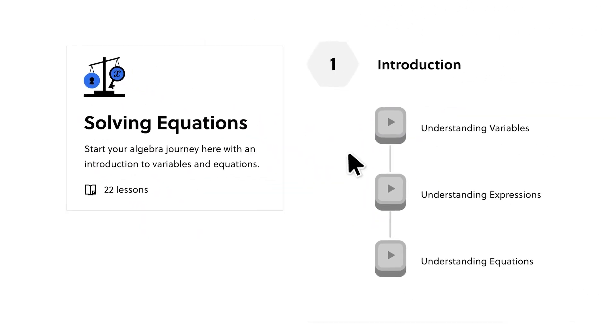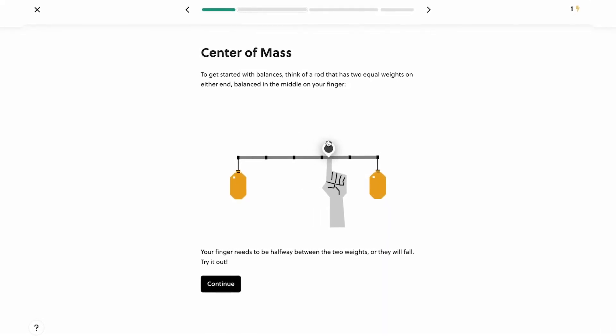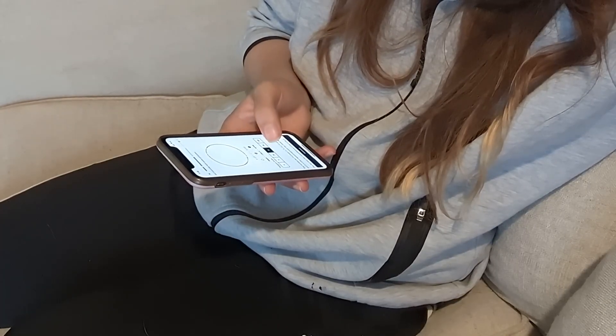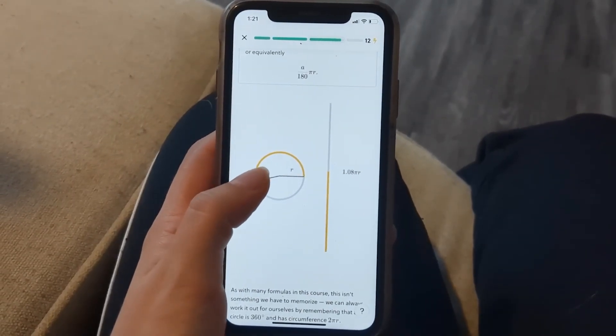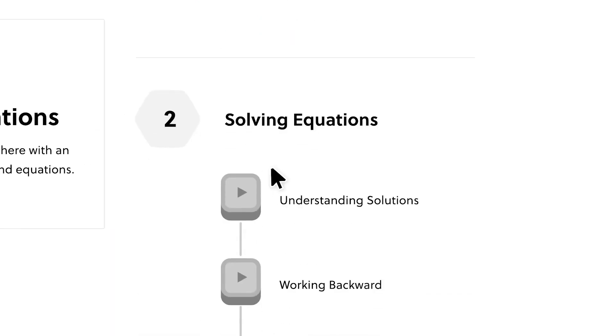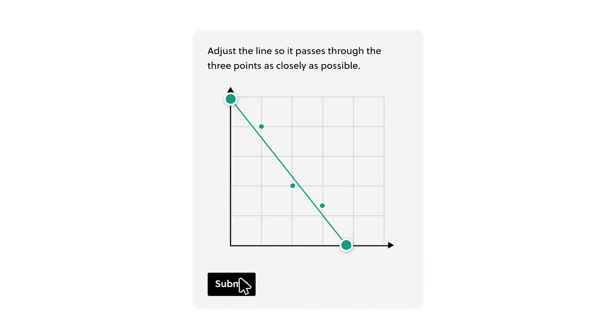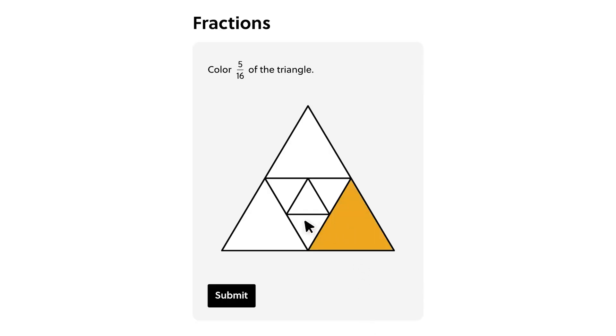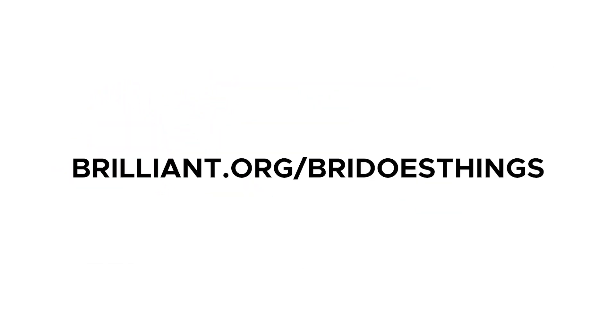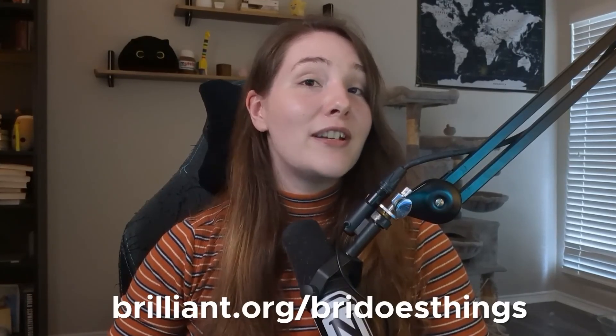My absolute favorite part of Brilliant is the way they structure their lessons. Instead of boring lecture videos, Brilliant provides visual, interactive lessons that keep you engaged and make building a daily learning habit easy. I'm currently going through Brilliant's Geometry Fundamentals course each morning. On top of starting my day with a sense of accomplishment, I'm really enjoying the challenge and feeling that I'm making small improvements every day. To try everything Brilliant has to offer free for 30 days, visit brilliant.org/breedoesthings — the first 200 people get 20% off the annual premium subscription.